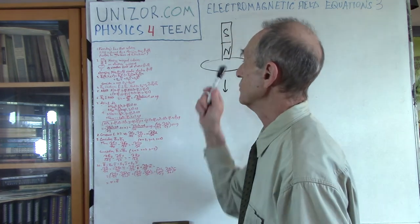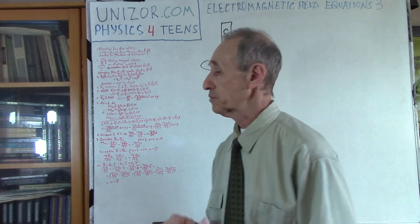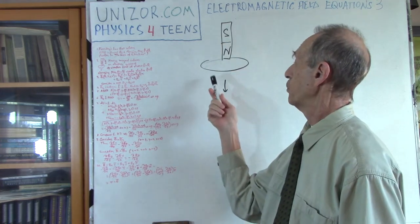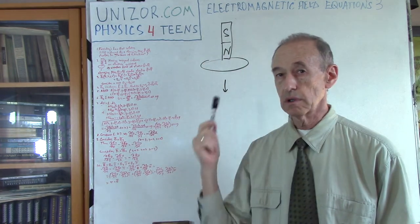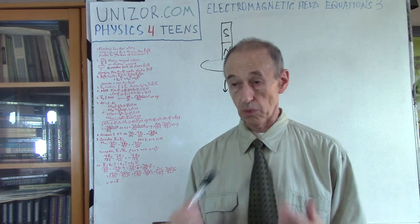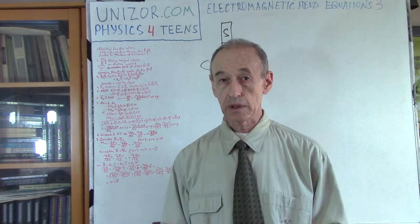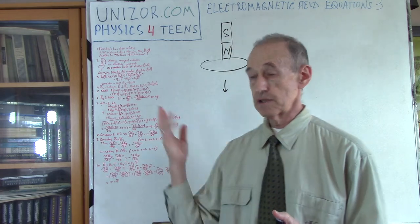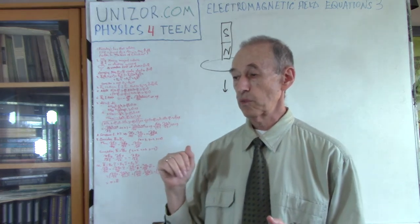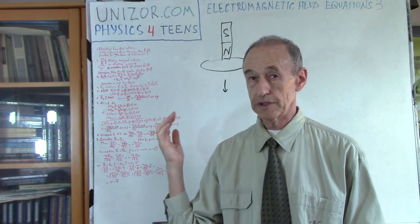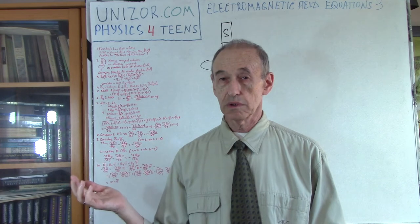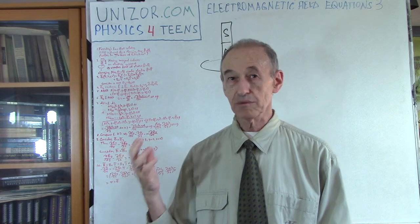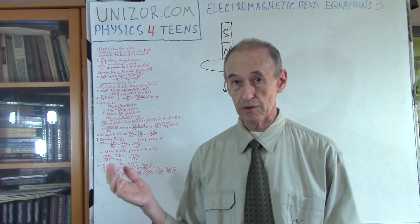Why does electric current circulate in the wire loop? Because there is some kind of electric field — the field which pushes electrons around. What if there is no wire loop at all — will the electric field be there? Of course it will. The wire loop is just a device which helps us see what's going on, regardless of whether the wire loop is there or not.